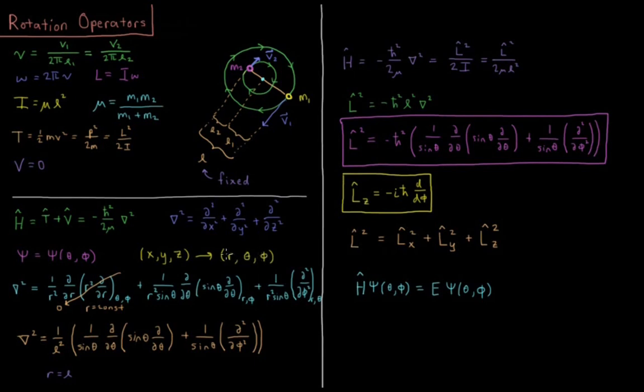And R, the radius, is constant because our bond length is fixed. So ψ is going to be a function of the two rotational angles, θ and φ. So we need to translate our Laplacian into spherical polar.